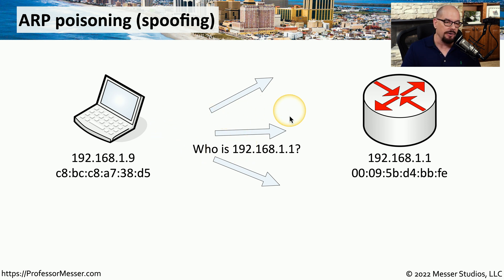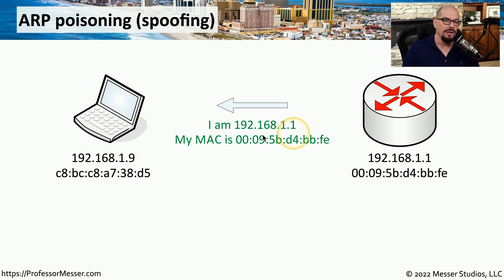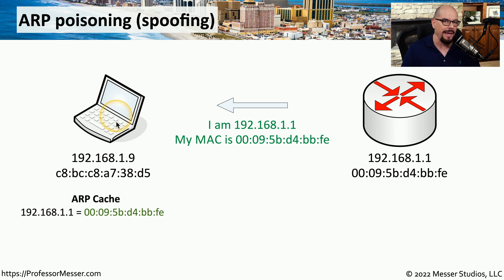So here we're sending that ARP message: who is 192.168.1.1? That message is sent to everyone on the local network. The router is on the local network, so it sends back a message saying that it is 192.168.1.1 and here is its MAC address ending in BBFE, so that you'll know who to communicate with. When that message is received by the laptop, it adds that information to the ARP cache, so now it knows that 192.168.1.1 is equal to the MAC address associated with the router.